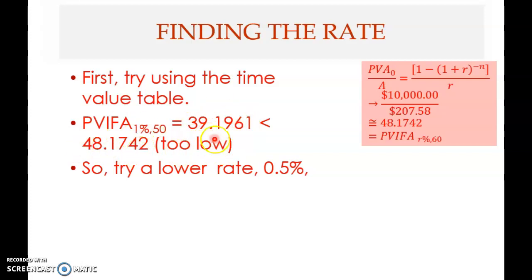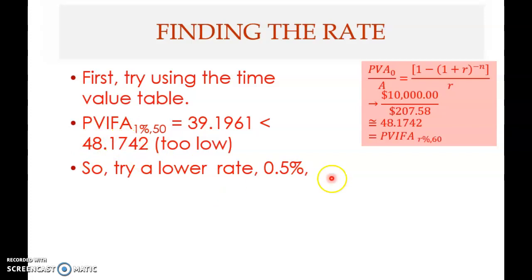Because 39.1961 is too low, you want a higher value, so you must use a lower rate. A lower discount rate will give a higher present value. Therefore, you need a lower discount rate — you cannot use one percent. The use of the time value table tells you which rate to try.